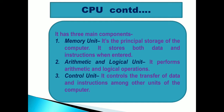CPU has three main components. First is the Memory Unit, which is the principal storage of the computer — it stores both data and instructions when entered. Second is the Arithmetic and Logic Unit, which performs arithmetic and logical operations. Third is the Control Unit, which controls the transfer of data and instructions among other units of the computer.